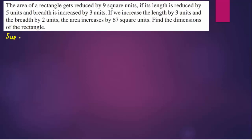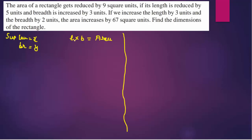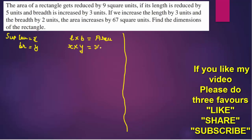Suppose length is equal to x and breadth is equal to y. We know that length into breadth equals area. So I can write x into y equals xy as the total area. This is our normal first given equation.